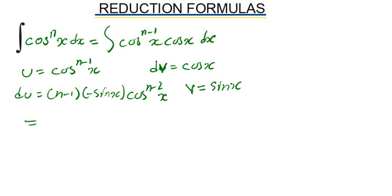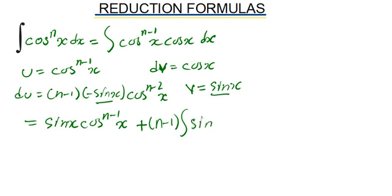Here we are just multiplying u by v, meaning we are going to have sine x times cosine to the n minus 1 of x. Then minus the integral of v by du. But when you look at this we have a negative here and a negative outside which becomes a positive. Then open bracket n minus 1, bring that coefficient outside. I have a sine here and a sine here, I'll make this as sine squared of x times cosine to the n minus 2 of x dx.